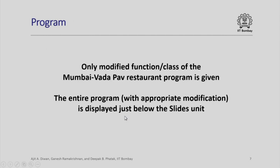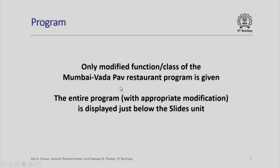We are not going to relook at the entire program. We will only look at the modified function and class of the Mumbai Vada Pao restaurant. The entire program with appropriate modifications is displayed under the slide unit on IIT Bombay X. Here is the program: the class restaurant, which was earlier written slightly differently — this time notice that I have a list. list_in_kitchen is a list of the type kitchen that has been added here. The rest of it is the same.